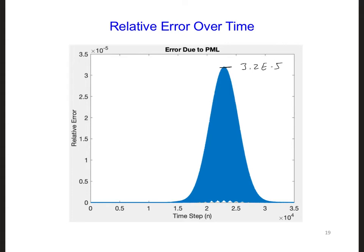Typical errors for radiation boundary conditions were down by a factor of 100 or maybe 1,000 or so, so on the order of 1 e to the minus 2 or 1 e to the minus 3, depending on the angle of incidence.